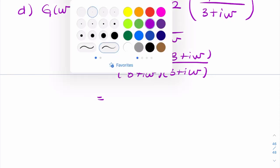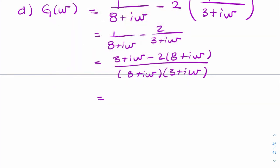And that simplifies, so you've got 16 and three, and you've got i omega minus two i omega, so it'll be minus 13 minus i omega into eight plus i omega, three plus i omega. And you can leave the denominator like that, that's fine. So that would be your final answer.